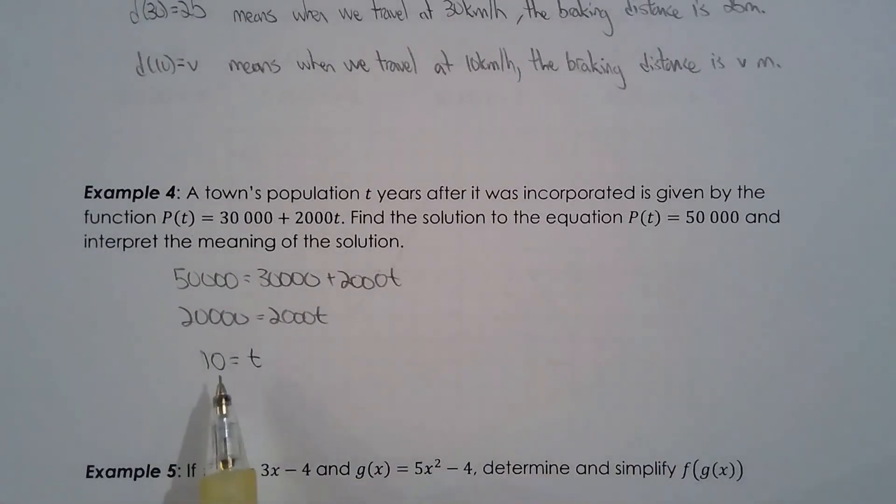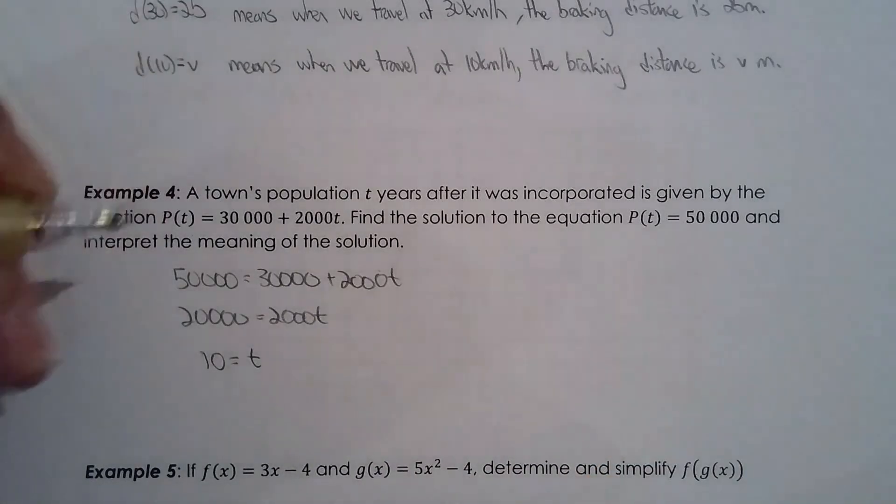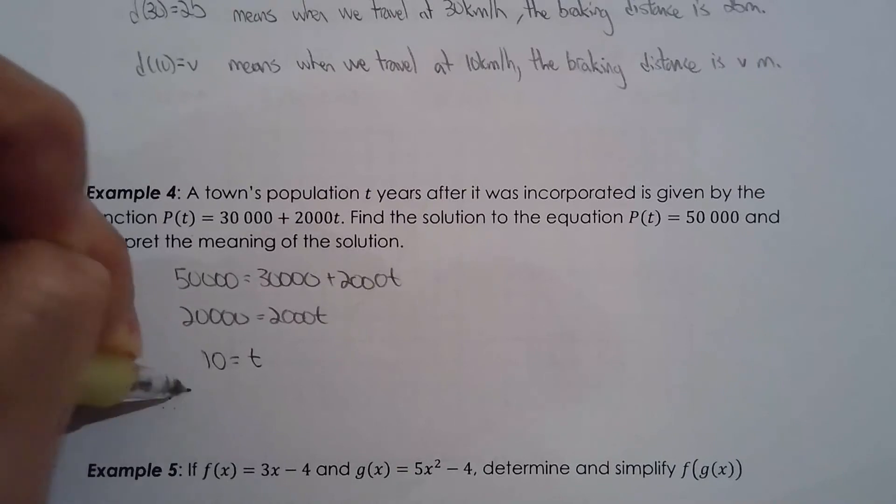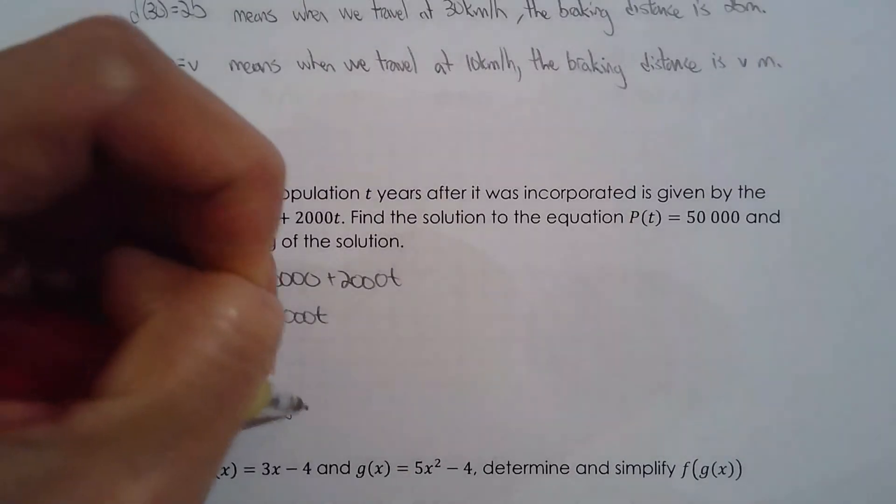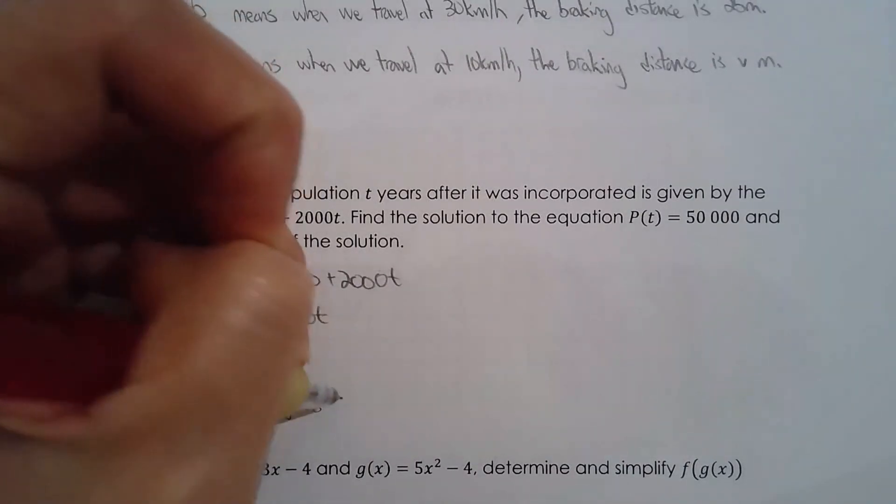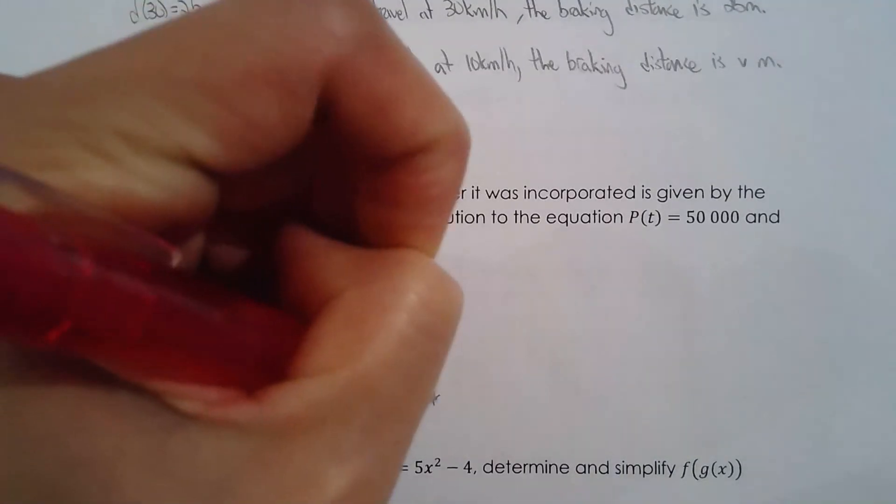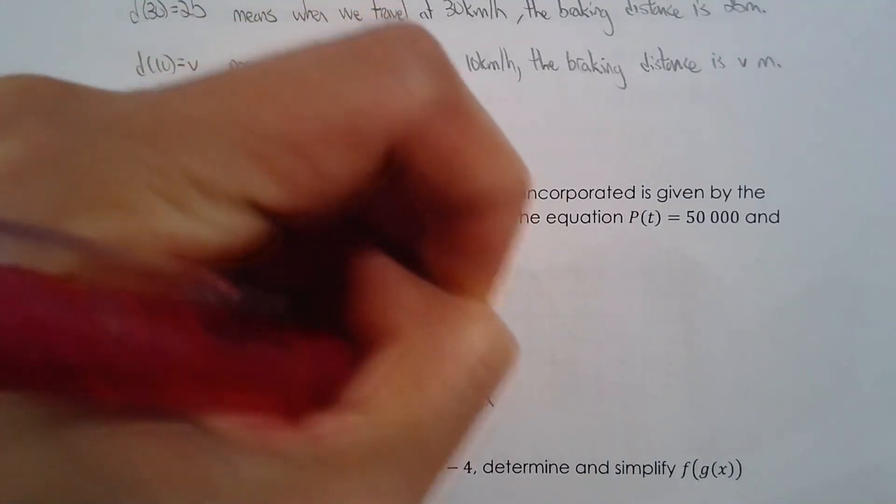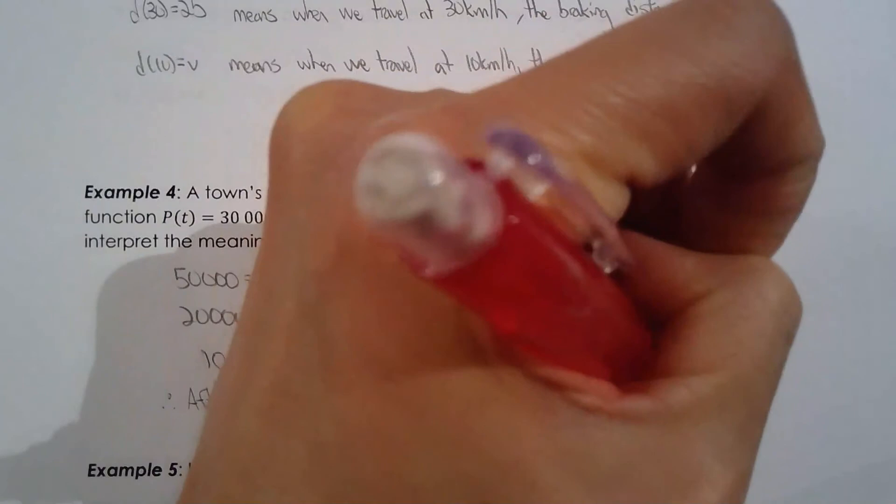The input needs to be 10 in order to achieve an output of 50,000. So that means therefore after 10 years, because t is time in years after it's incorporated, after 10 years the population is 50,000.